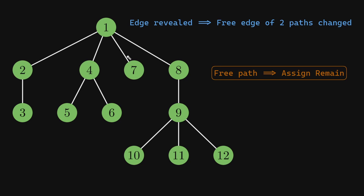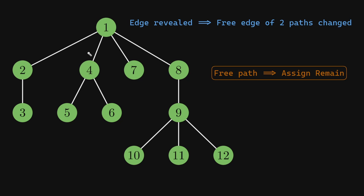Suppose a subset of edges have already been revealed and the total sum of unrevealed edges is R. For a path between node X and X plus 1, either all edges on the path have been revealed — in which case the answer equals the sum of all revealed edges on that path — or there is at least one unrevealed edge, and you can increase the answer by placing the entire remaining weight R on that edge. Therefore, we need to track the number of free edges on each path and the total sum of revealed edges on each path. Since every edge contributes to exactly one downward path and one upward path, updating the contribution can be done in O(1).